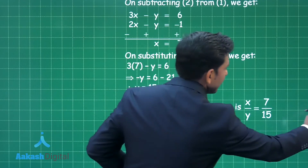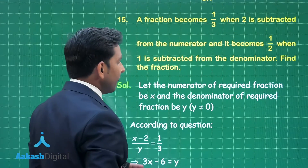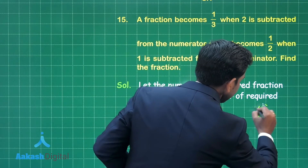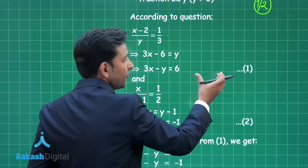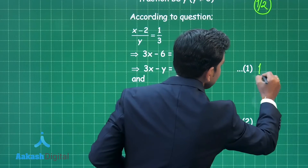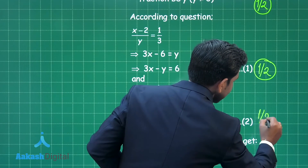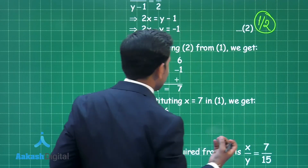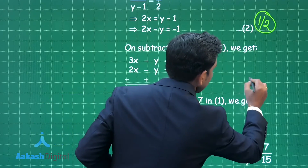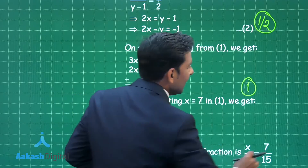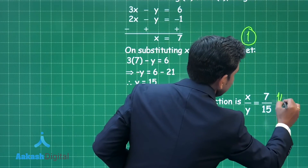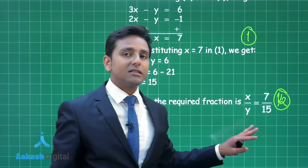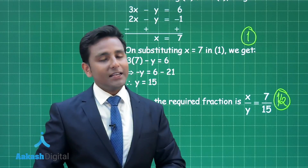Now the marking scheme for the optional part: considering the numerator and denominator gives half a mark. Obtaining the first equation gives half a mark and the second equation gives another half mark. Solving the 2 equations using elimination method gives 1 mark, and the final answer — the required fraction 7/15 — gives the remaining half mark.